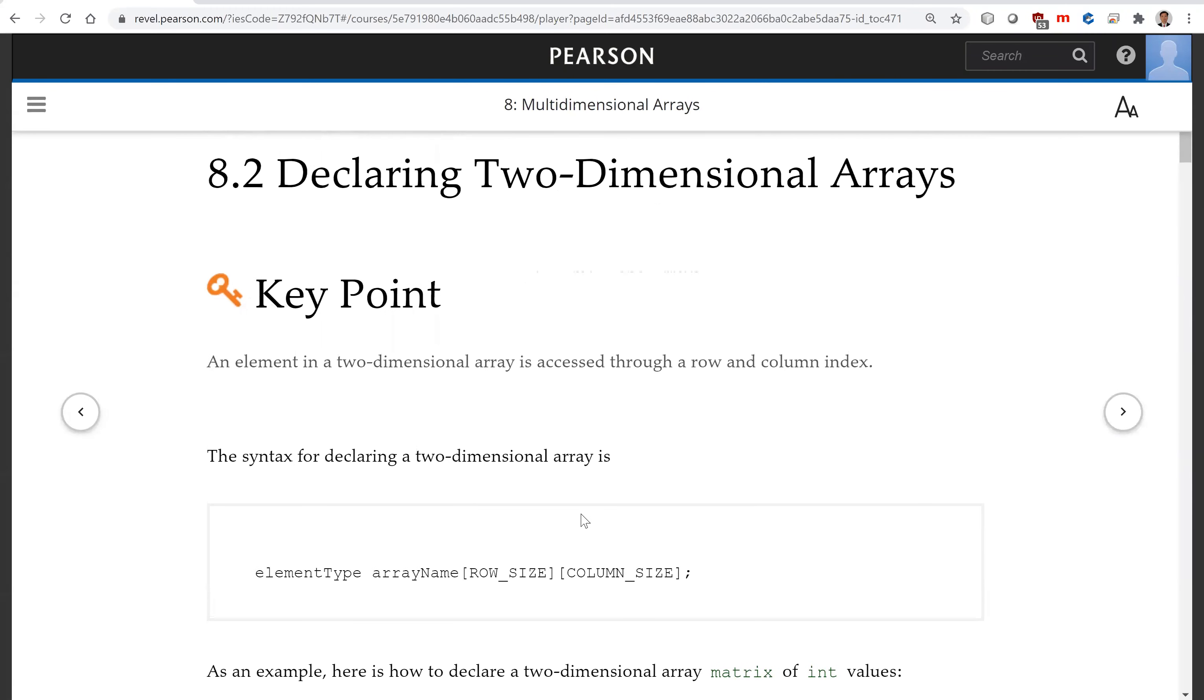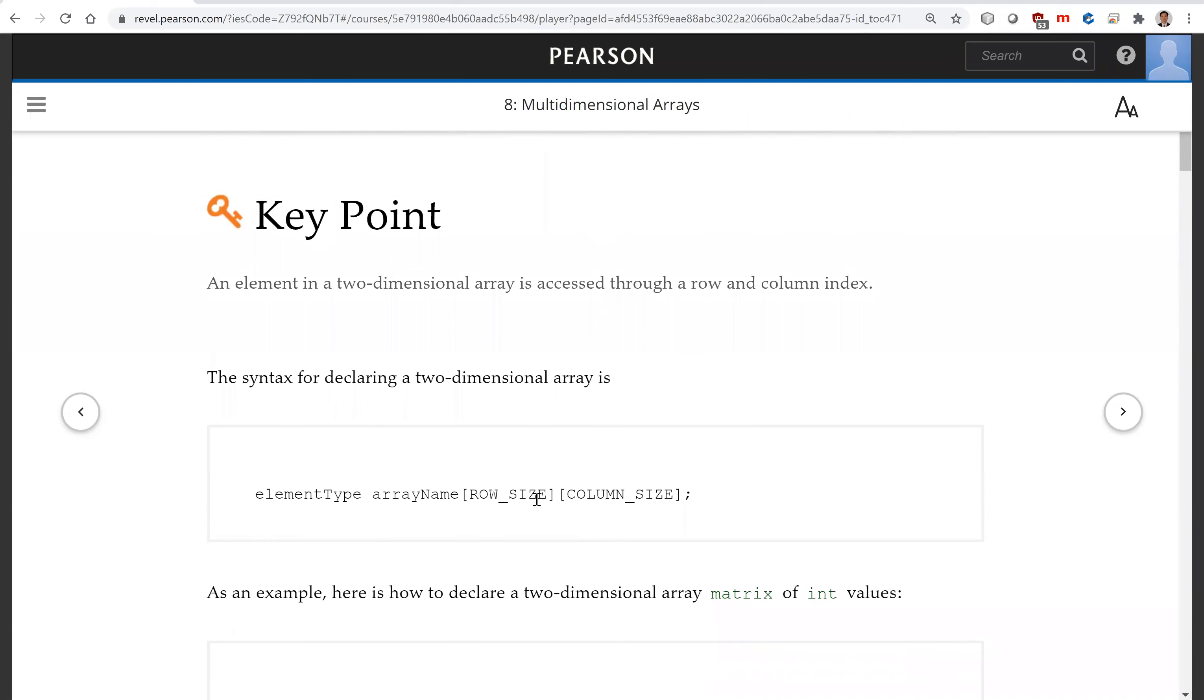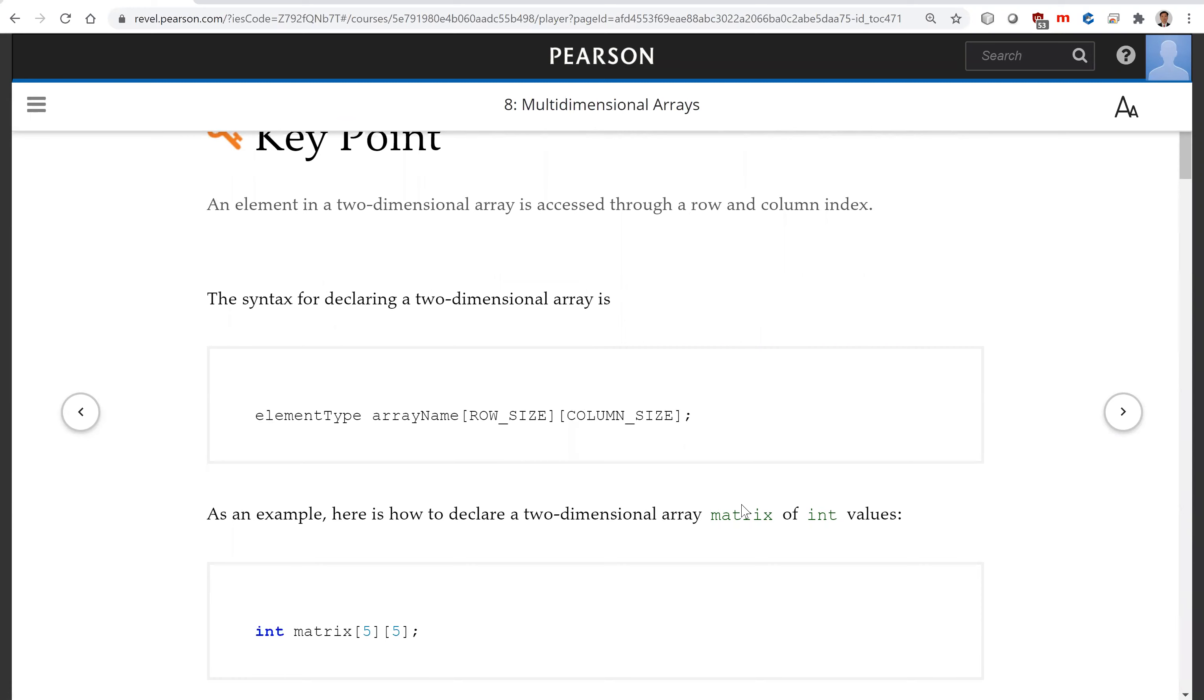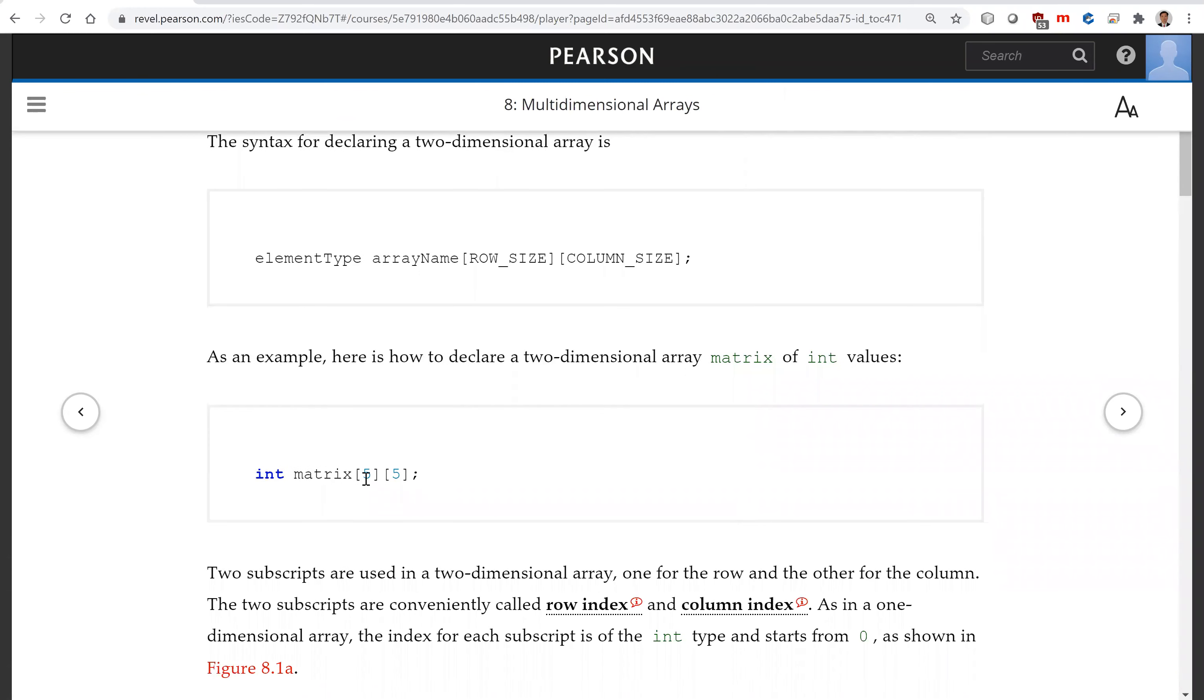To declare a two-dimensional array, you specify the row size and the column size. For example, this is a matrix with five rows and five columns.